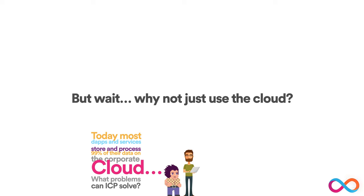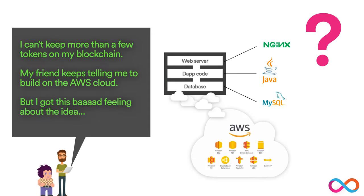Some of you might be wondering: why not just use the cloud? Today, most apps and services store and process 99% of their data on the corporate cloud. What problems can ICP solve? You can imagine saying: I can't keep more than a few tokens on my blockchain, and my friend keeps telling me to build on Amazon Web Services. This is the kind of architecture you'd use there — you would combine a database and a web server with some custom dApp code. Your web server might be Nginx, your database might be MySQL, and you might write your dApp code in Java.